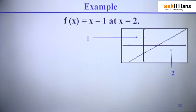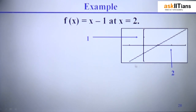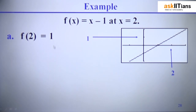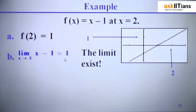Let's make it firmer with an example. We have the function f(x) = x − 1, and we need to check whether it is continuous at x = 2. On the right-hand side you can see the graph of f(x) = x − 1, with the x-axis, y-axis, the point 2 on the x-axis, and the point 1 on the y-axis. First, we find the value of the function at x = 2: since this is a linear function, we substitute directly and get f(2) = 2 − 1 = 1.